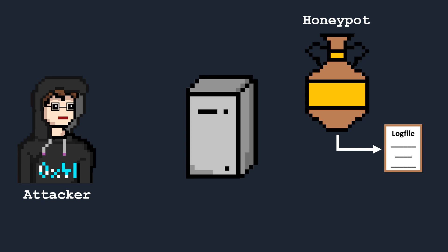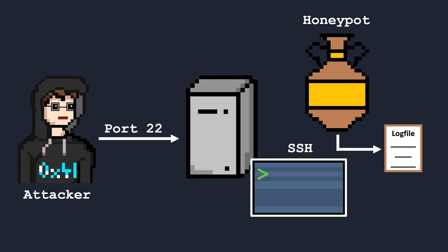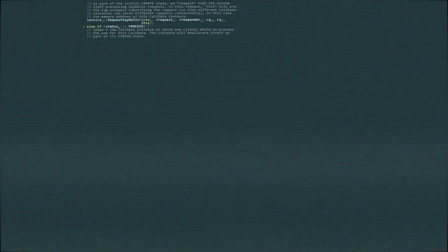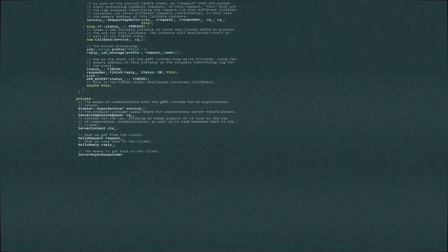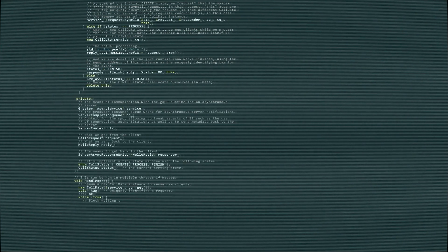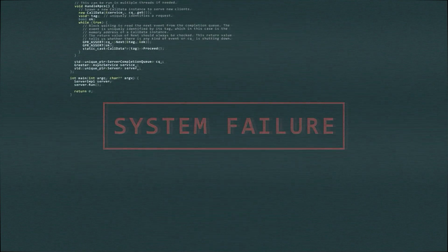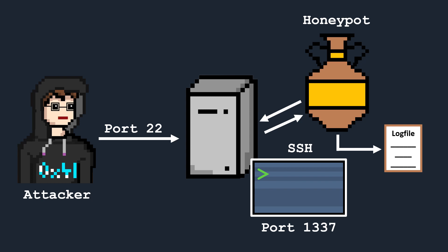This can be done by simulating a well-known service such as SSH, which, like the original, listens on port 22 by default, but in reality does not allow any combination of usernames and passwords. No matter what credentials the attacker tries to log in with, the honeypot does not let him through because its only purpose is to slow down the attacker and to record which usernames and passwords he enters. This can reveal whether it's a brute force attack or a targeted attack against specific users in the system, without compromising the real system.